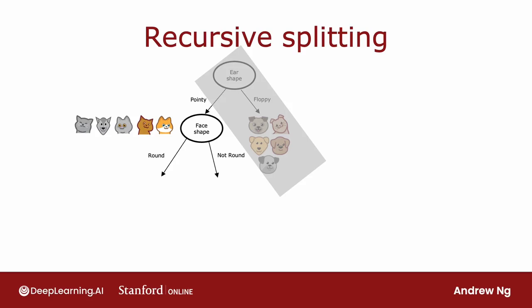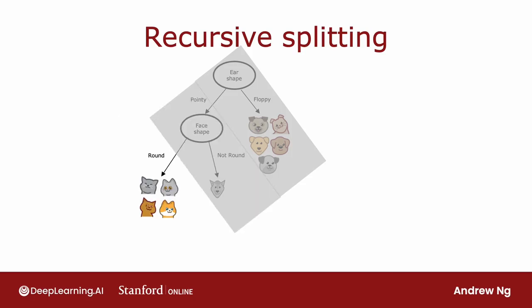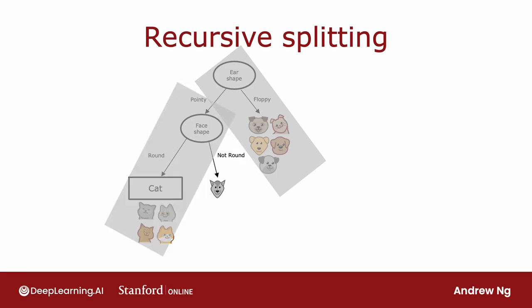That allows us to build left and right sub-branches. For the left sub-branch, we check the criteria for whether we should stop splitting, and we have all cats here, so the stopping criteria is met and we create a leaf node that predicts cat. For the right sub-branch, we find it is all dogs, so we also stop splitting and put a leaf node there that predicts not cat.